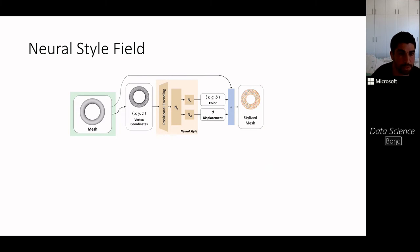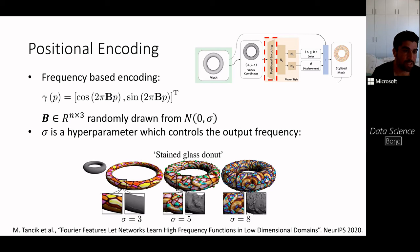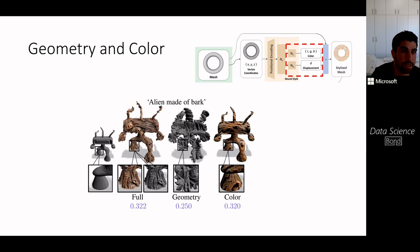Looking at the components in more detail: the positional encoding is a frequency-based encoding introduced in the NeRF paper. This frequency-based encoding allows us to control the frequency of the output — by changing the standard deviation in the encoding, we can control the output frequency, from coarse to fine detail. The next component is the two MLPs that produce either a color or a displacement along the normals.